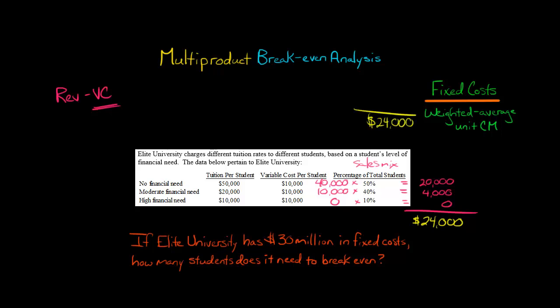In the numerator we have $30,000,000 of fixed costs, divided by the weighted average contribution margin of $24,000. If you divide this out, you get 1,250. That's our break-even point in terms of the number of students.